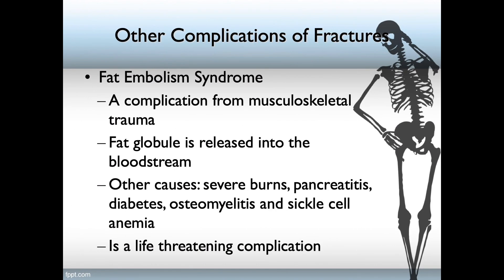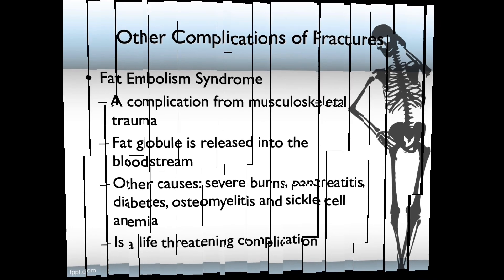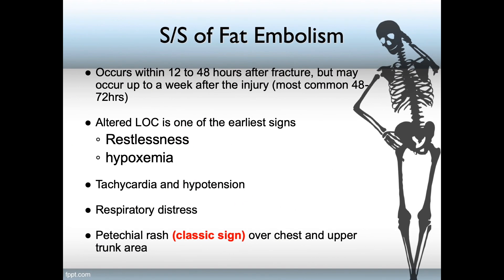Fat embolism syndrome is also a complication of a fracture. It occurs when a fat globule is released into the bloodstream and occludes the surrounding tissue — fairly critical if it ends up in the lung. Other sources of fat embolism syndrome include severe burns, pancreatitis, diabetes, osteomyelitis, and sickle cell anemia. Since it can impact critical organs, it can be life-threatening. Signs and symptoms usually occur 12 to 48 hours after the fracture, but may occur up to a week after injury; it is most common in the 48 to 72 hour window.